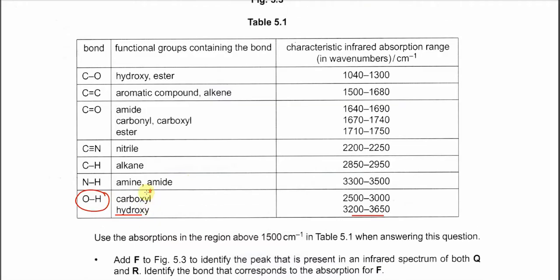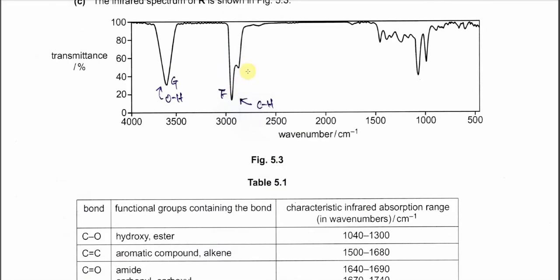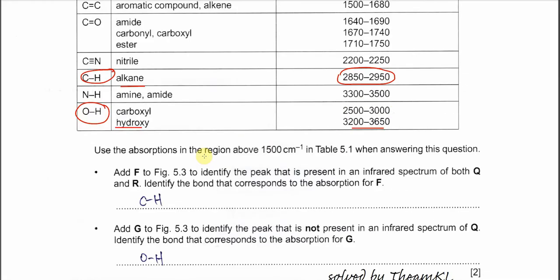For the CH bond just now. Okay this is the alkane. The CH bond. The functional group is alkane. And the absorption is around this range. 2850 to 2950 which is around here. Okay so this is the CH bond. Okay if you understand this then you can answer the following part.